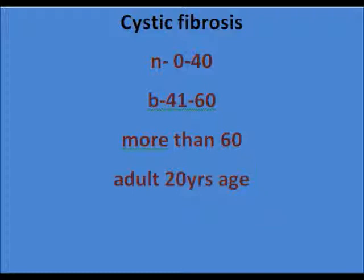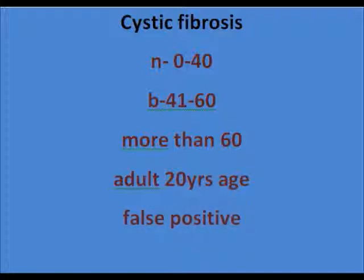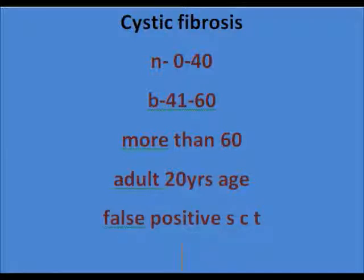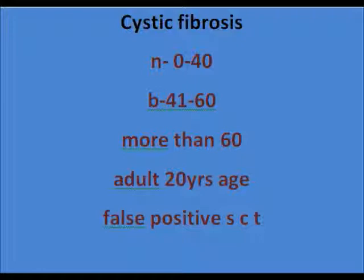Now the main topic: false positive sweat chloride test. False positive means if you do the sweat chloride test in certain patients, you can get a sweat chloride result of more than 60 even without cystic fibrosis. The diseases which cause this include the following.